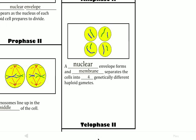In telophase 2, we're left with four new cells. Each of those cells has half a set of chromosomes — only two — so we call them haploid cells. They're all sex cells, so either egg or sperm. These are gametes, because gametes are sex cells.